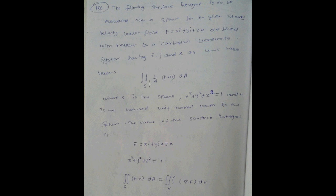Double integral of surface, 1 divided by 4, f dot n into da, where s is the sphere x square plus y square plus z square equal to 1, and n is the outward unit normal vector to the sphere.